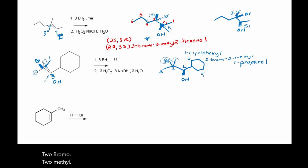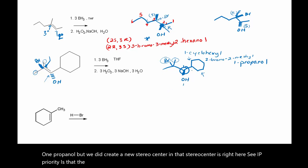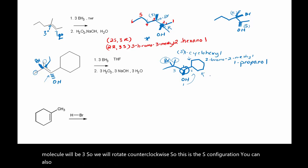But we did create a new stereocenter. CIP priority is that the OH gets the one, the cyclohexyl group will be two, and then the rest of the molecule will be three. So we will rotate counterclockwise. So this is the S configuration. You can also form the other enantiomer — the R.